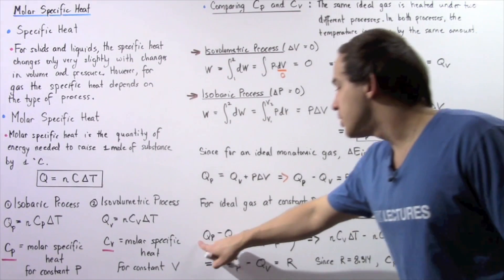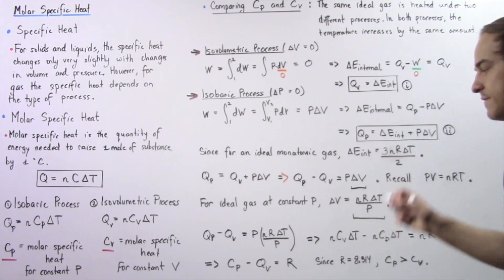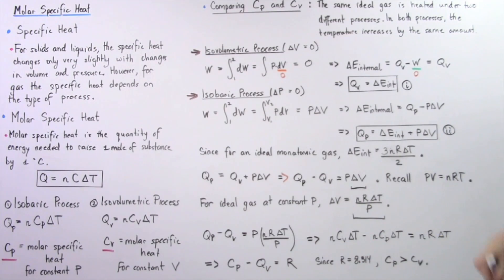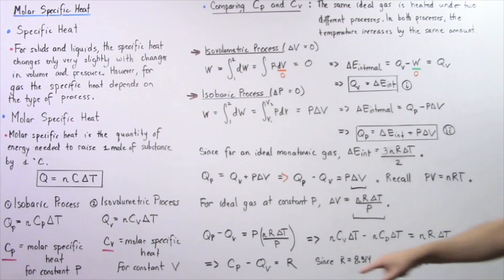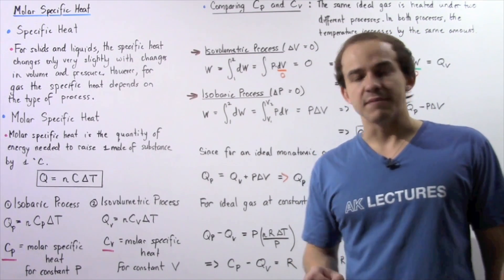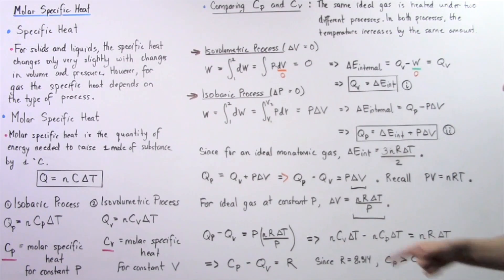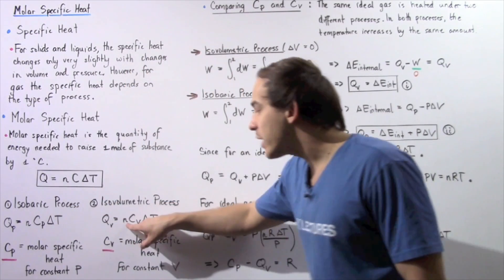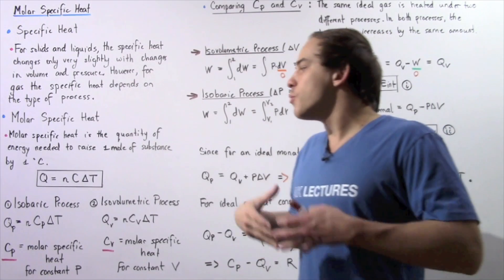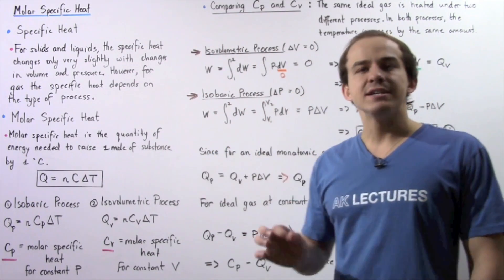Now replacing Qp and Qv using Q = NcΔT, we get N·Cp·ΔT minus N·Cv·ΔT equals N·R·ΔT. The N's and ΔT's cancel, leaving Cp minus Cv equals R, the universal gas constant. Because R is a positive constant, this means Cp is greater than Cv — there is more energy transferred in an isobaric process than in an isovolumetric process.